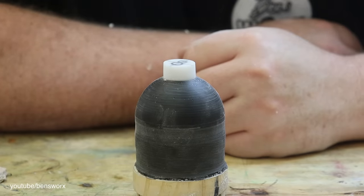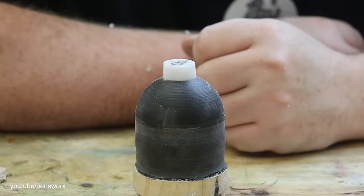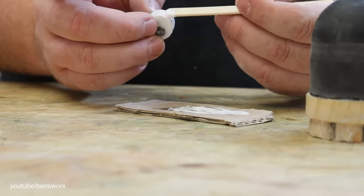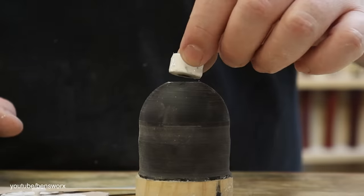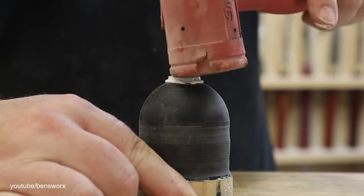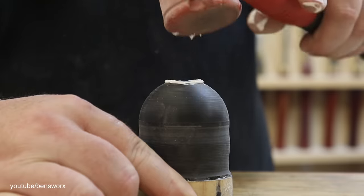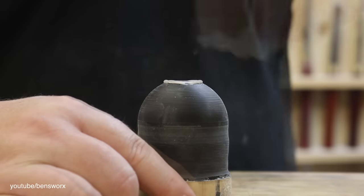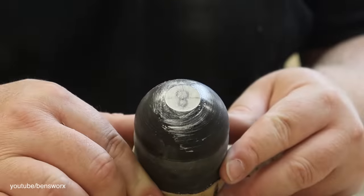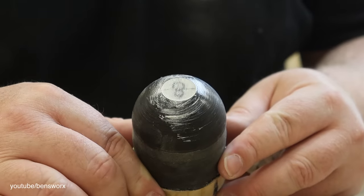That seems pretty tight to me. Now the next thing I need to do is glue this in. Now we've just got to wait for the glue to dry and we can put it back on the lathe.